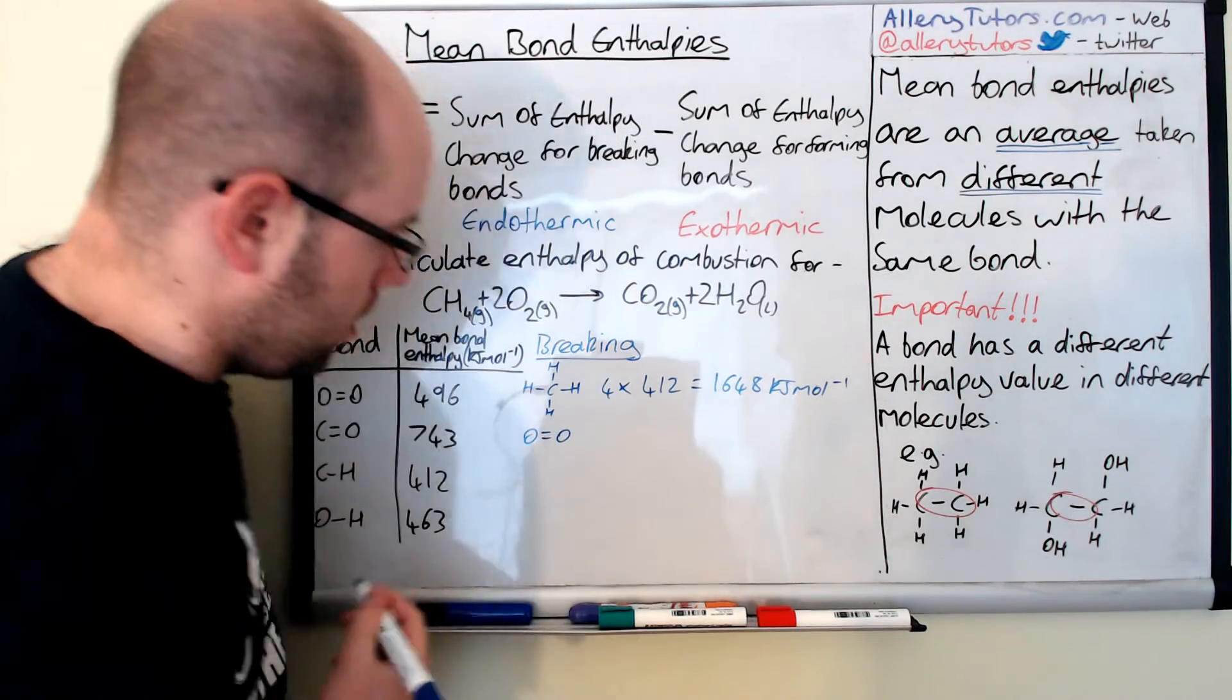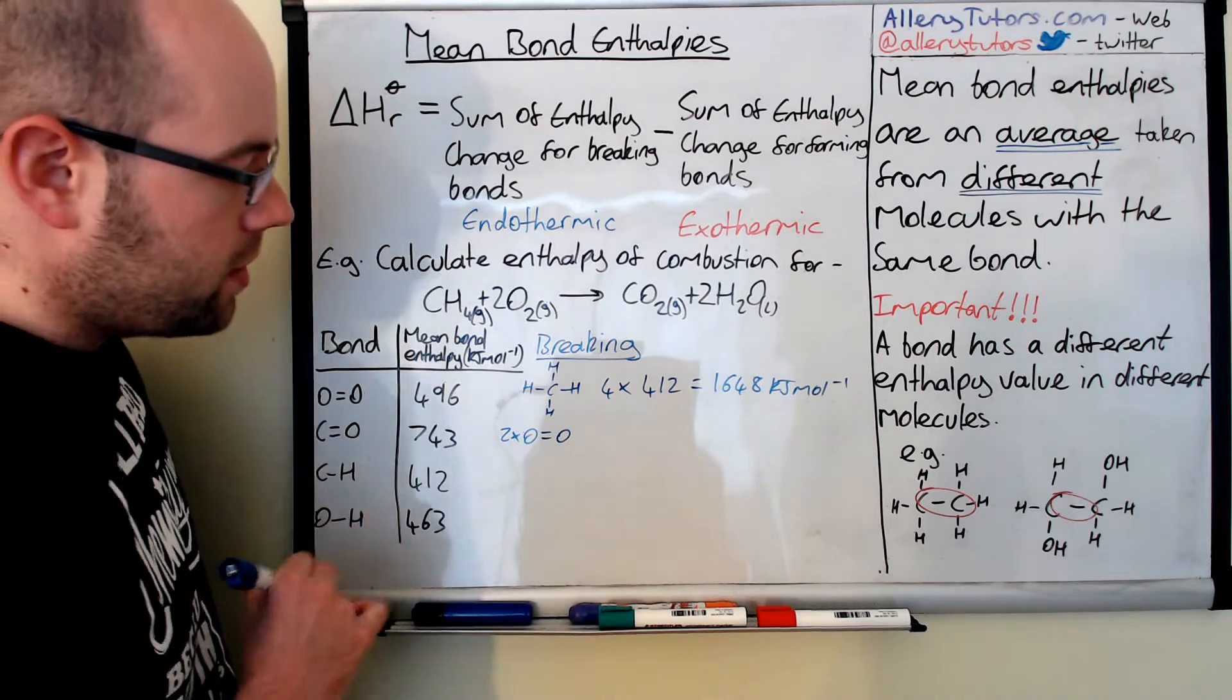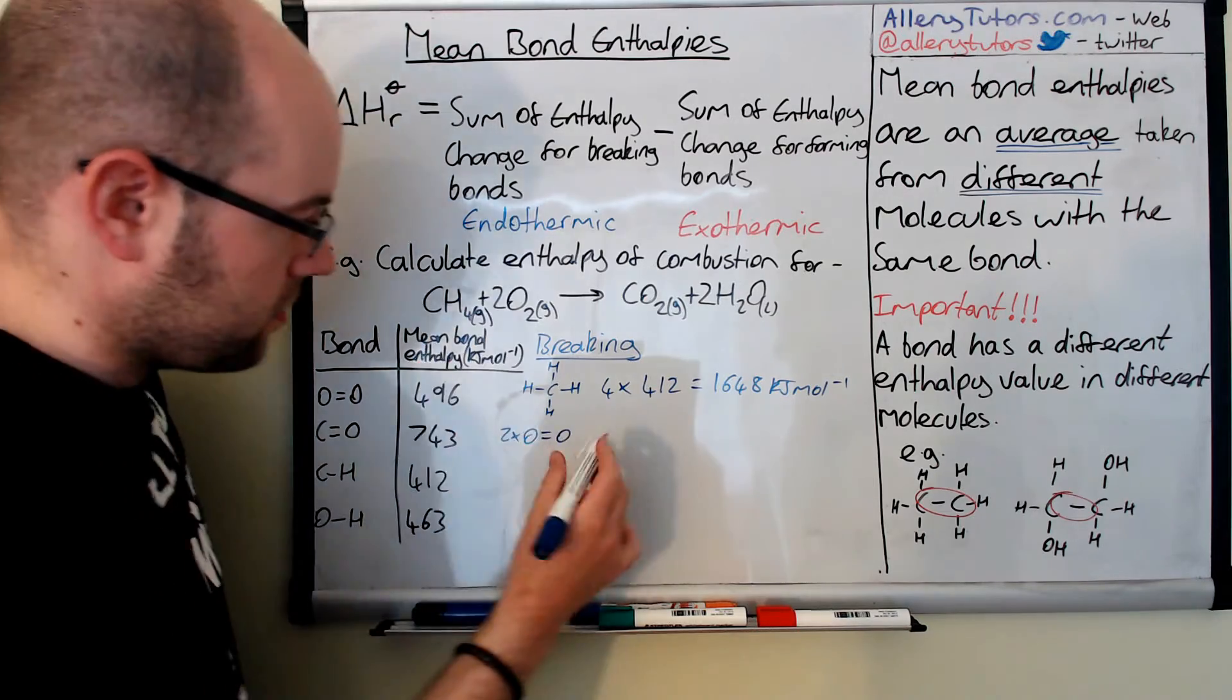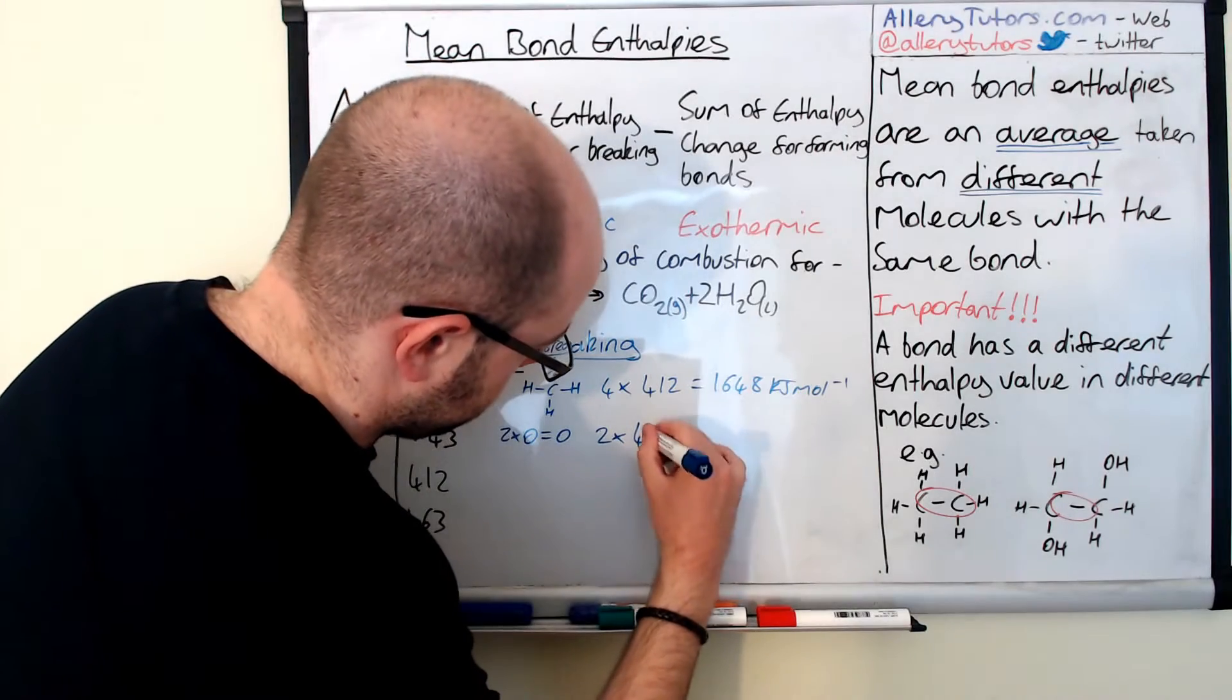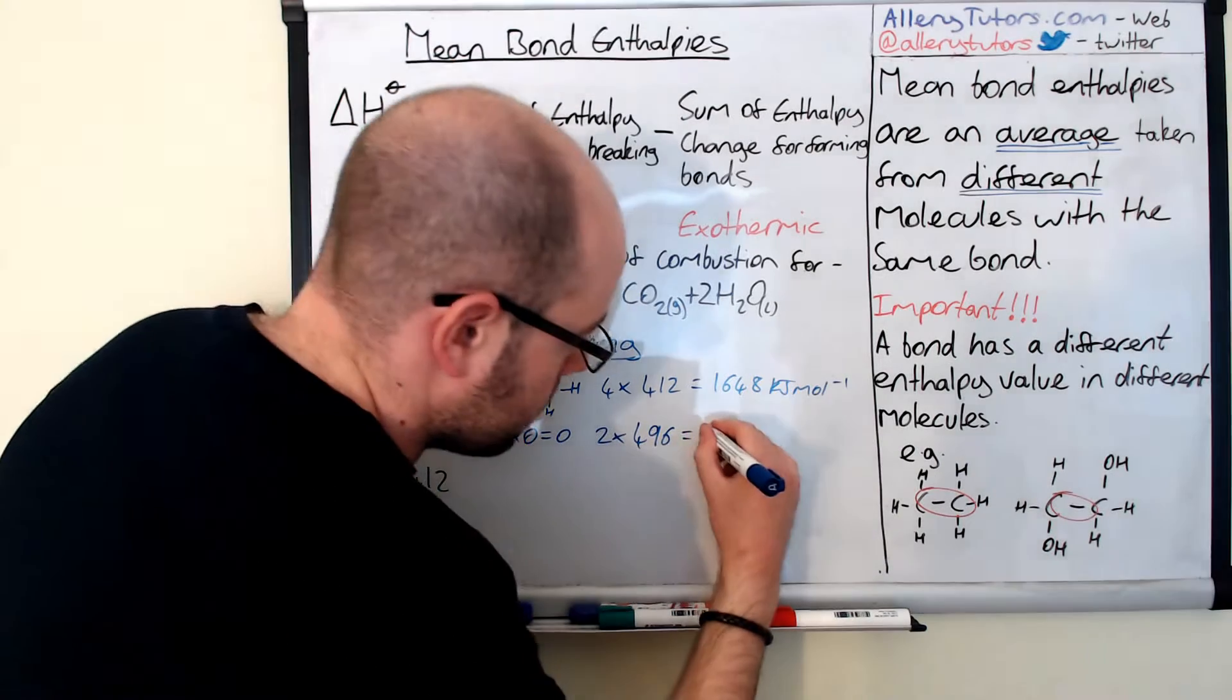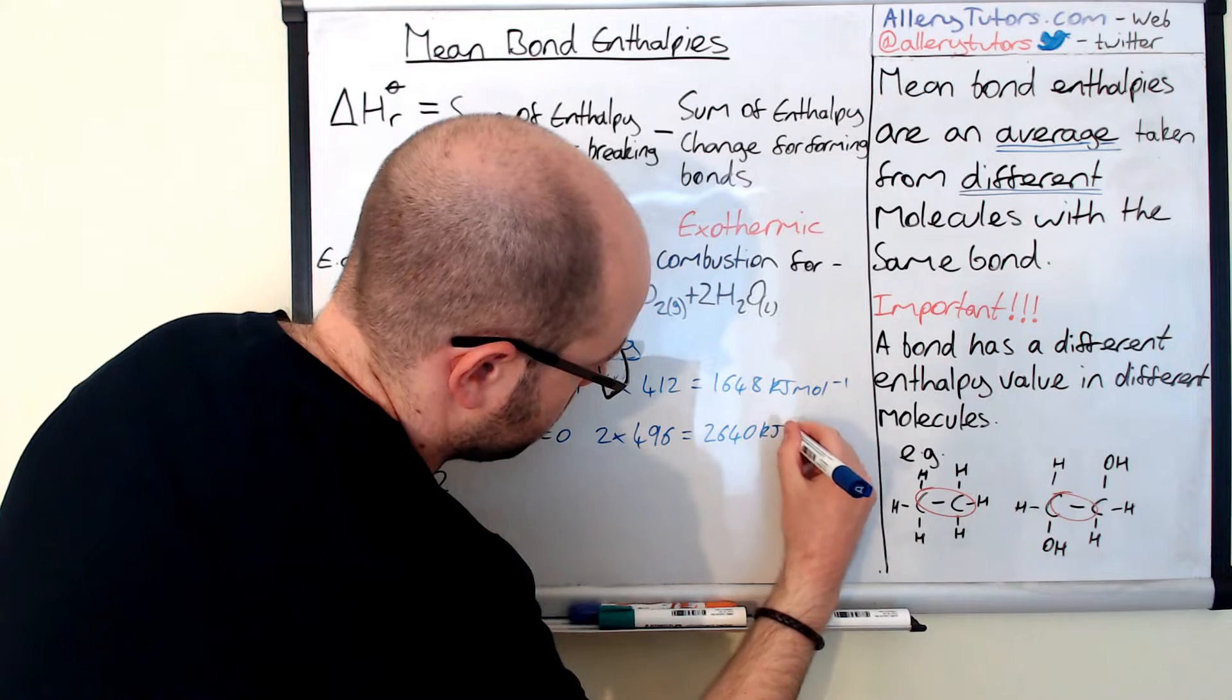We've also got to break an O2 bond. So we're going to put O2 like that, but we have two lots of O2. We've got an O double bond O which is there, 496. Because we've got two molecules there we need to multiply that by two. So that's two lots of 496, and if we put that into our calculator we should get a value of 992 kilojoules per mole.